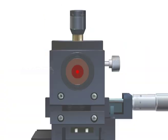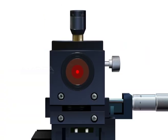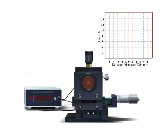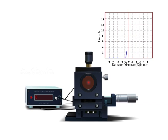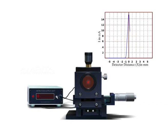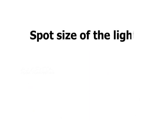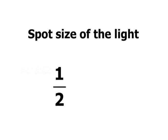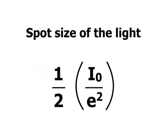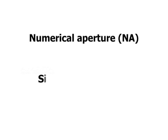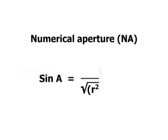Step 6: The detector is then scanned horizontally and the distance is measured with the screw gauge. Step 7: Plot the graph between each point of the detector scanned on the x-axis and its corresponding maximum intensity of current on the y-axis. Step 8: Calculate the spot size of the light using the formula half of i₀ by e². Step 9: The numerical aperture can be calculated using the formula sin(a) = r divided by the square root of r² plus d².